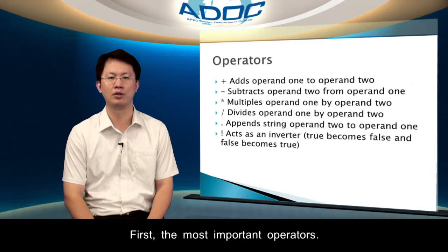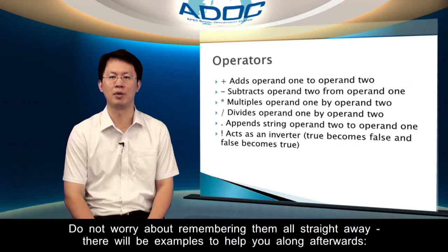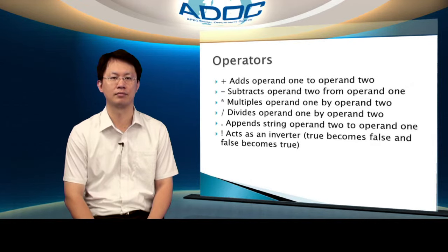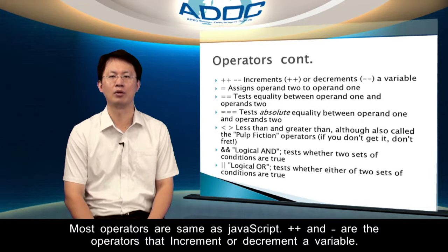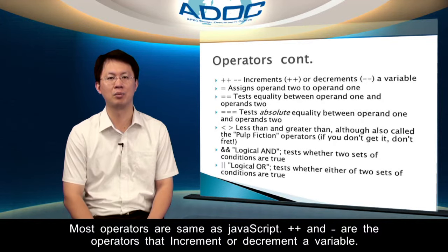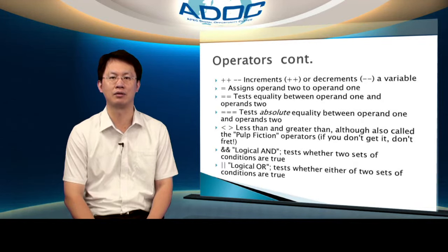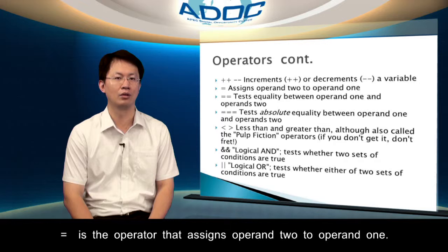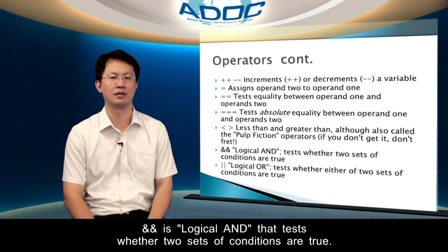First, the most important operators — do not worry about remembering them all straight away. There will be examples to help you along afterwards. Most operators are the same as JavaScript. Plus-plus and minus-minus are the operators that increment or decrement a value. Equals is the operator that assigns operand 2 to operand 1. And 'and' is logical AND, which tests whether two sets of conditions are true.